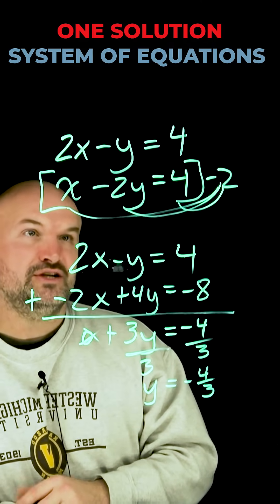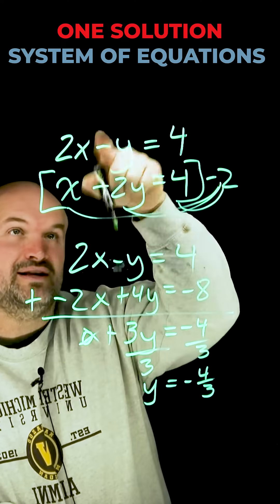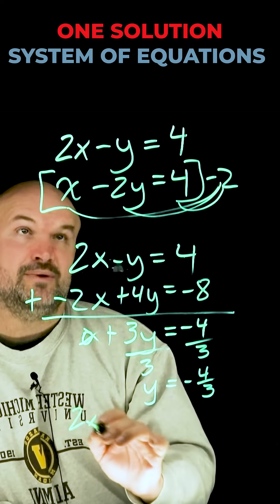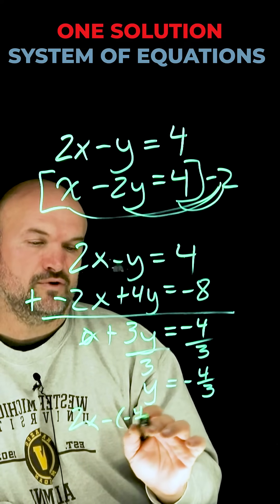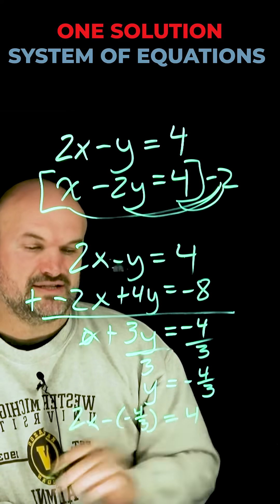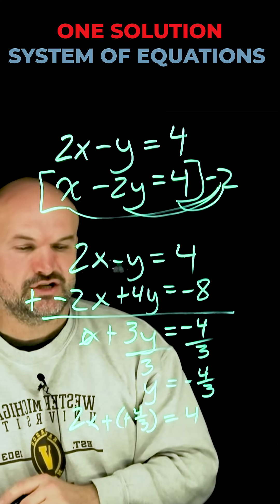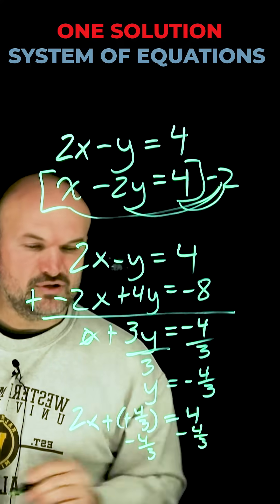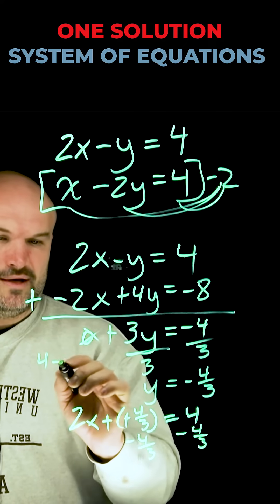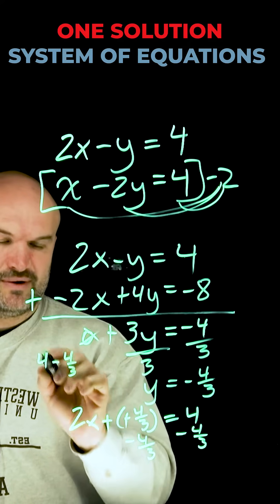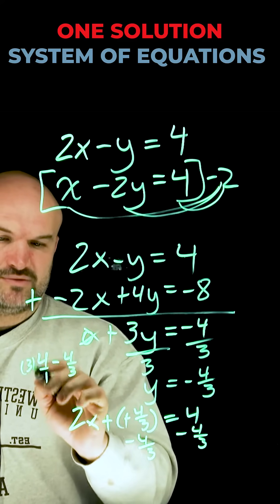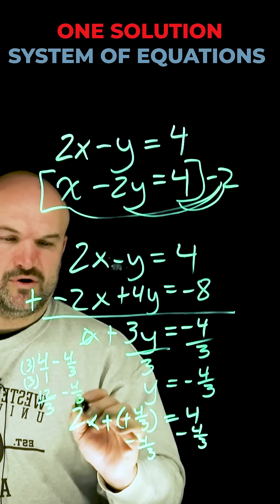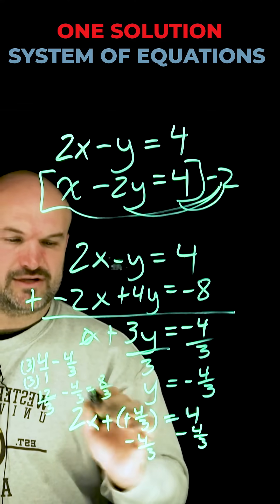So to do that, I'm simply going to plug in my y into one of these equations. I'm going to choose the top equation and solve for x. So in this case, I have 2x minus a negative four thirds equals positive four. So minus a negative, that's basically just going to turn to a positive. Then I'm going to subtract four thirds on both sides. If I was going to do four minus four thirds, I can rewrite the four as four over one multiplied by three over three. So that's going to be twelve over three minus four over three, which is eight over three.